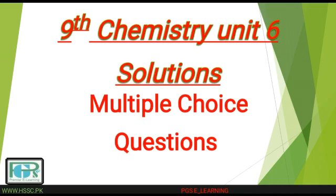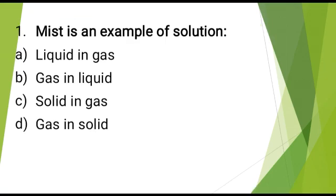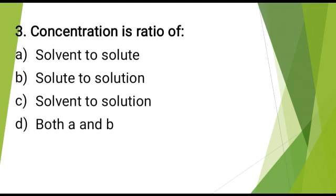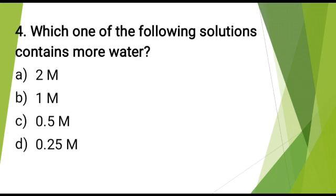Unit number 6 Multiple choice questions. Mist is an example of solutions? The correct answer is: liquid in gas. Which one of the following is a liquid in solid solution? The correct answer is: butter. Concentration is ratio of? The correct answer is: solute to solution. Which one of the following solution contains more water? The correct answer is: 0.25M.